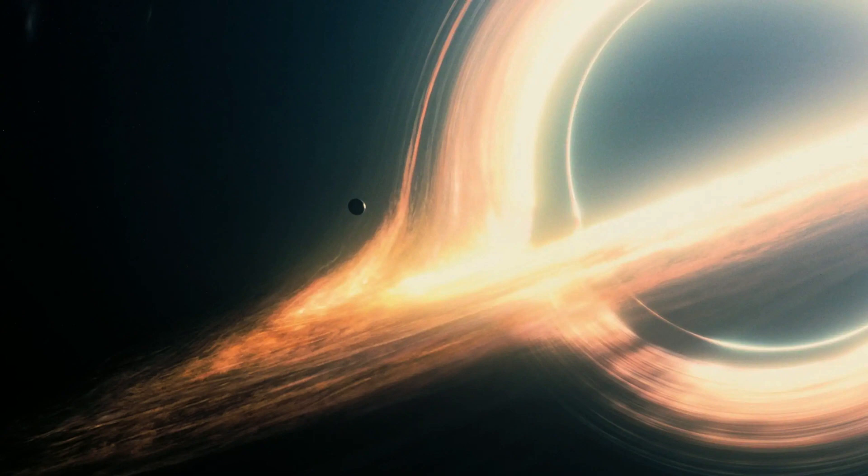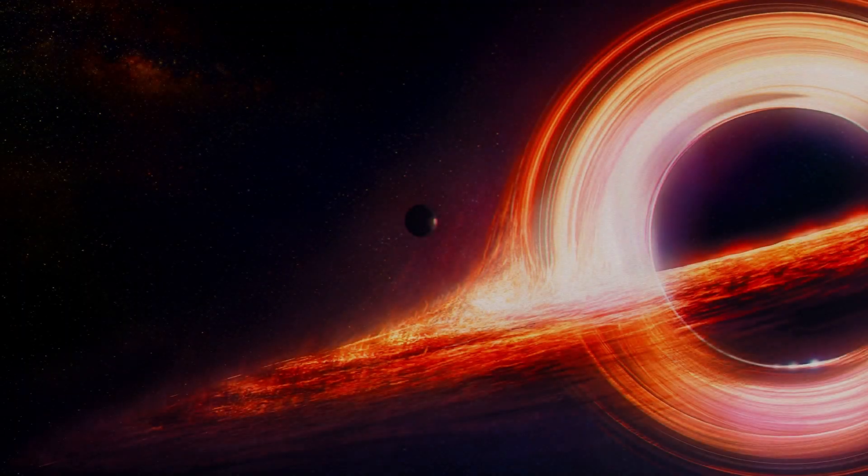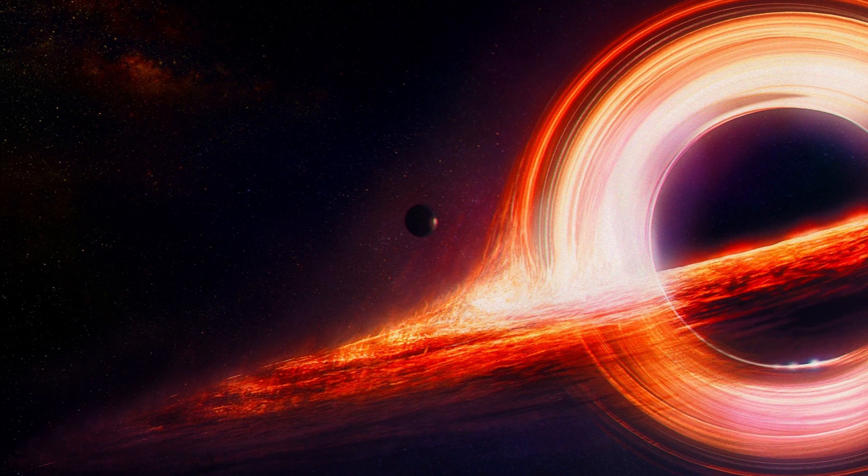Black holes have several profound effects on the cosmos. The gravitational pull of a black hole is so strong that it distorts spacetime itself. This effect, predicted by Einstein's theory of general relativity, is responsible for the characteristic bending of light known as gravitational lensing.